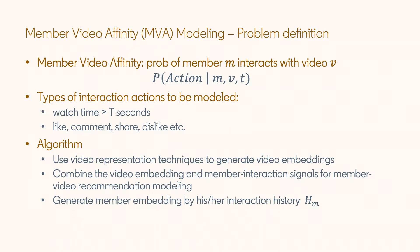Now let's talk about how we make use of the image embeddings to predict member video interaction. We define the problem of member video affinity as the probability of a member M interacting with a particular video V. We can view different member video affinity models for different types of actions such as watch time, like, share, comment, etc. To train such an MVA model, the video embedding we have generated will be used together with the member video interaction data points. We can also generate member embedding directly by the member's interaction history HM and use simple cosine similarity to compute MVA scores.